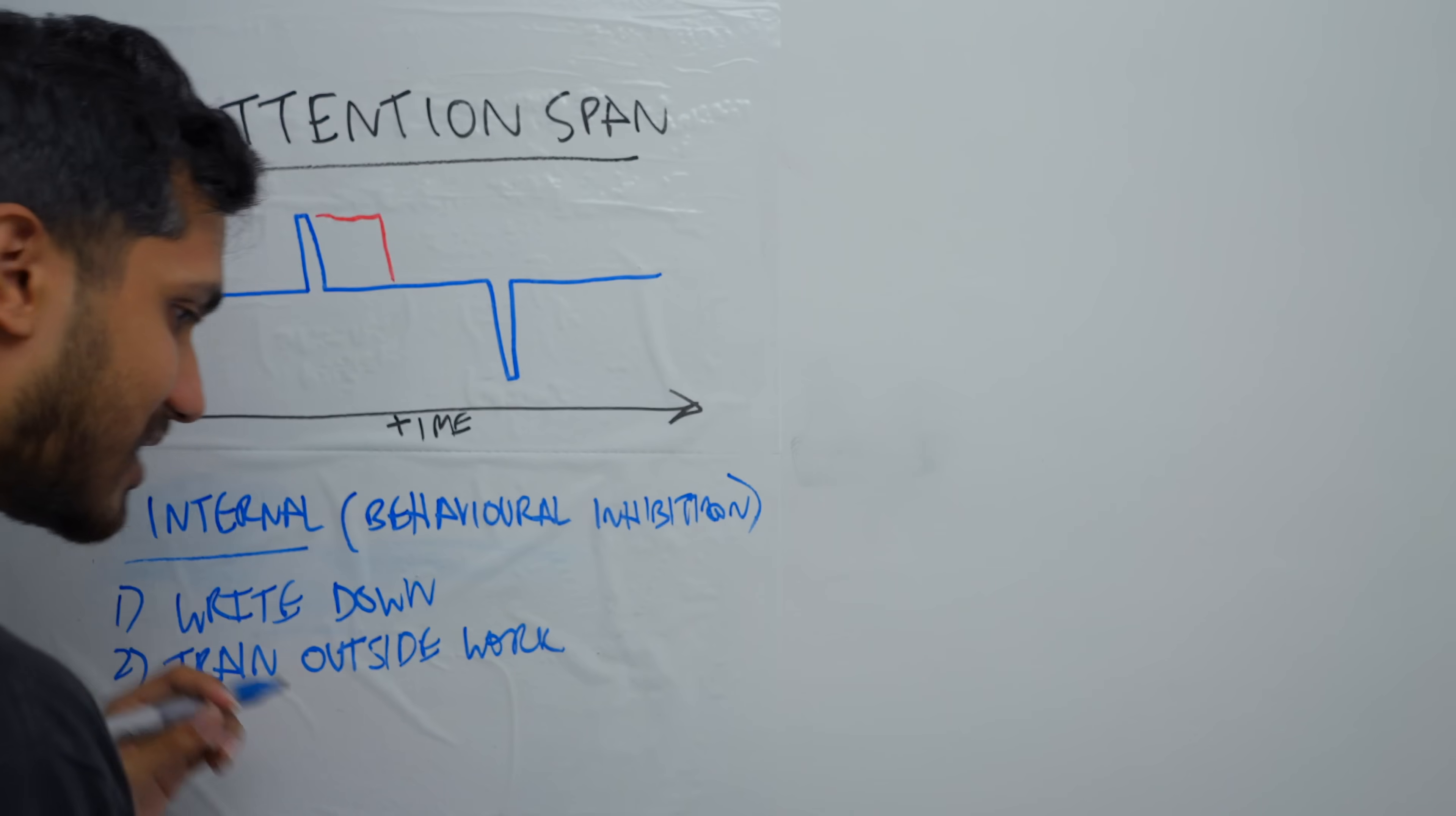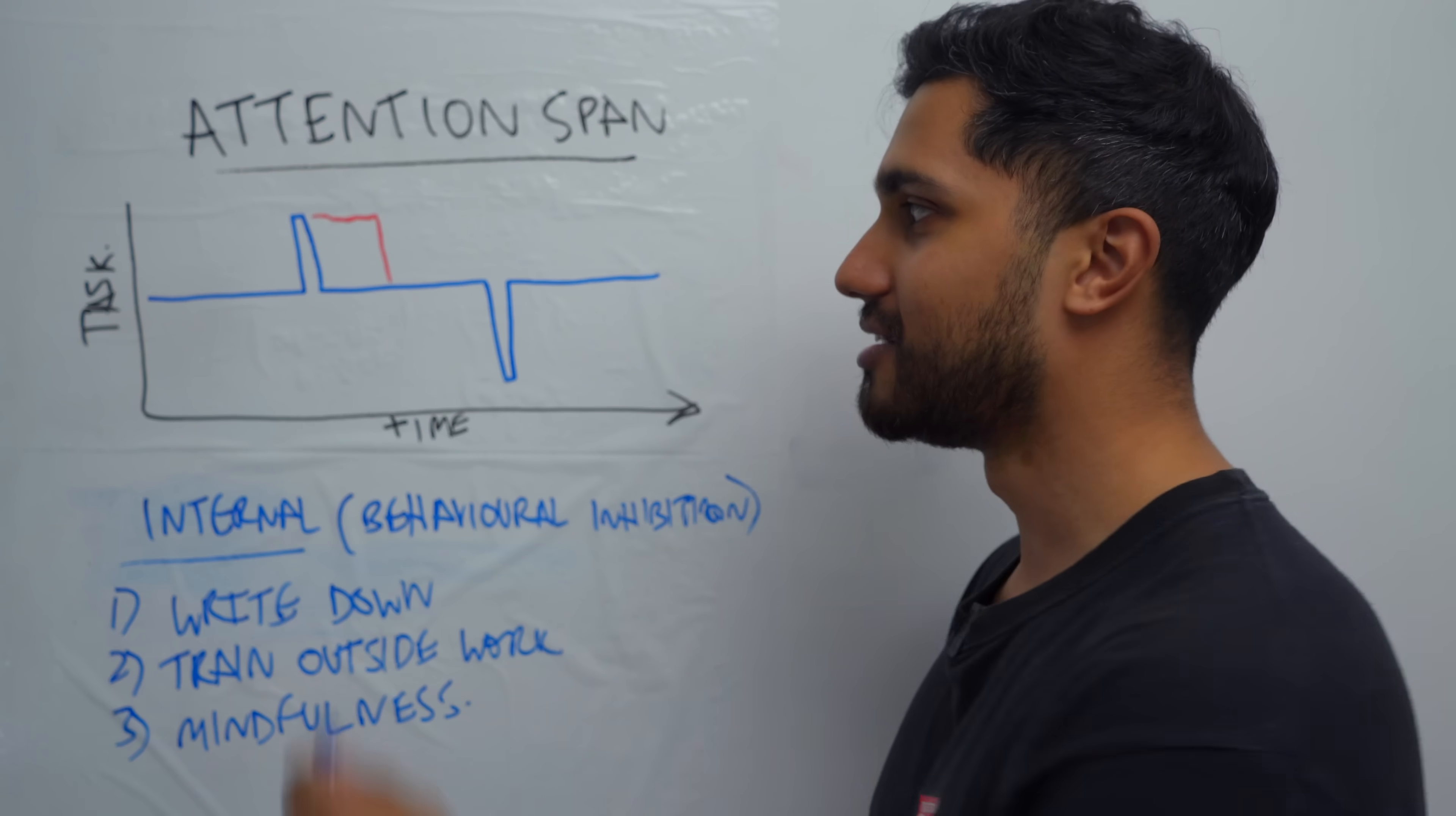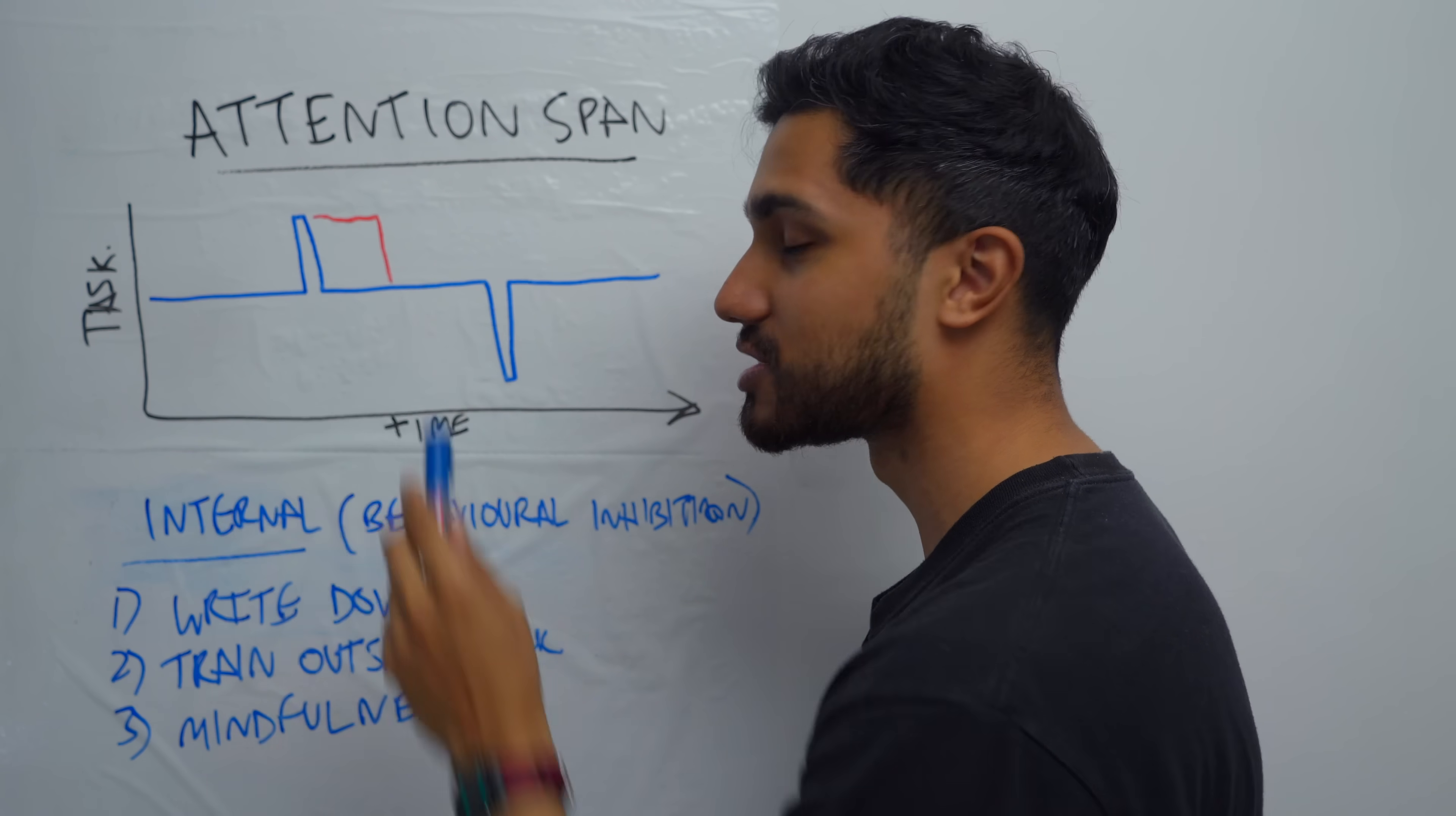And then the third, the best, single best habit that you can do to increase your behavioral inhibition is mindfulness. It's an ancient training of focus. Effectively, what you do is you focus on your breath and that's the intended task that you do. You sit down with no distractions. You have one task, which is listen to your breath and pay attention. And then you will always get distracted by multiple thoughts. Even in a five minute period, you'll probably get hundreds of different thoughts, but you basically train your ability to let them go and then focus back on the other thing.